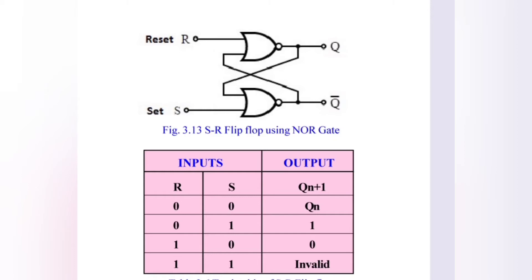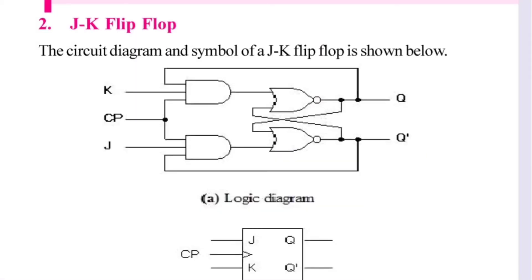This completes the SR flip-flop. Next is the JK flip-flop. The JK flip-flop uses a clock pulse. The diagram consists of 2 AND gates and 2 NOR gates, with J and K as inputs.